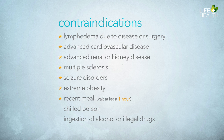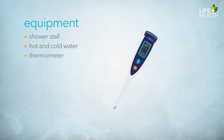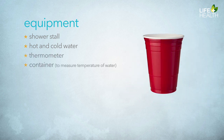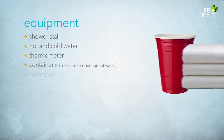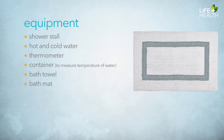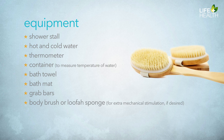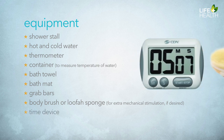Here's the equipment you need for the contrast shower: a shower stall, hot and cold water, a thermometer, a container to measure the temperature of the water, a bath towel, a bath mat, grab bars on the sides for people who are unsteady, a body brush or loofah sponge for extra mechanical stimulation if desired (which will make the treatment more intense), and a timing device.